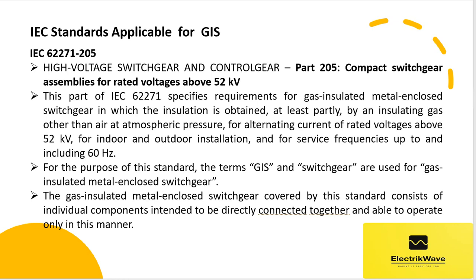IEC 62271-205: High Voltage Switchgear and Control Gear, Part 205, Compact Switchgear Assemblies for Rated Voltages Above 52 kV. This part of IEC 62271 specifies requirements for gas-insulated metal-enclosed switchgear in which the insulation is obtained, at least partly, by an insulating gas other than air at atmospheric pressure, for alternating current of rated voltages above 52 kV, for indoor and outdoor installation, and for service frequencies up to and including 60 Hz. For the purpose of this standard, the terms GIS and Switchgear are used for gas-insulated metal-enclosed switchgear. The gas-insulated metal-enclosed switchgear covered by this standard consists of individual components intended to be directly connected together and able to operate only in this manner.